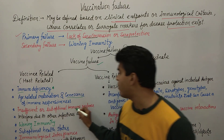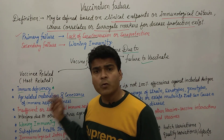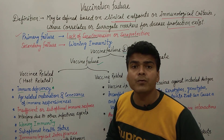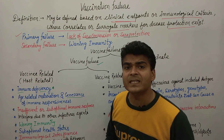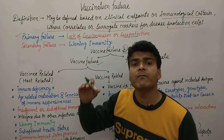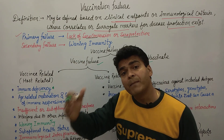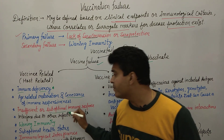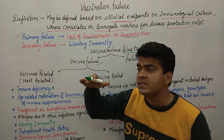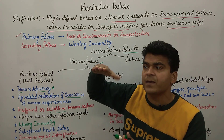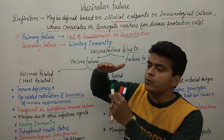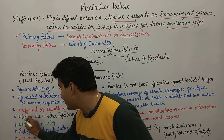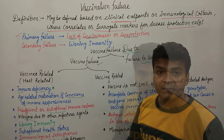The third reason is insufficient or sub-optimal immune response. Suppose the vaccine was given to a person and after giving the vaccine, the immune response generated was insufficient — meaning antibodies were generated but not enough to fight a bacterial or viral attack. Sub-optimal immune response means the optimum response required was not achieved; the immune power generated fell short of what was needed.